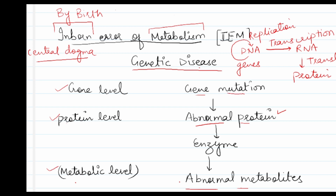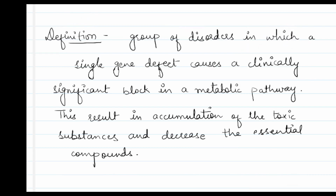So this is about the central dogma and inborn errors of metabolism. At the gene level, there is a mutation. This mutated gene forms an abnormal protein, which makes an abnormal enzyme. If there is a deficiency of this enzyme, it will form abnormal metabolites. IEM are a group of disorders in which a single gene defect causes a clinically significant block in a metabolic pathway.